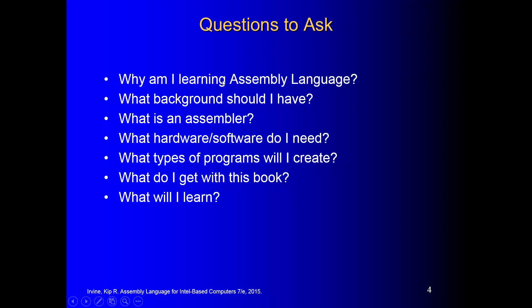First, it's because this is part of your degree plan. Second, it's important to know assembly language as a computer science student. Third, it's very useful — it's going to help you later in your career when you move on to higher level learnings. What background should you have? You need to have passed Programming Fundamentals 1, which is Computer Science 1436, where you learned logic thinking, basic programming structures, loops, if statements, and switch statements.